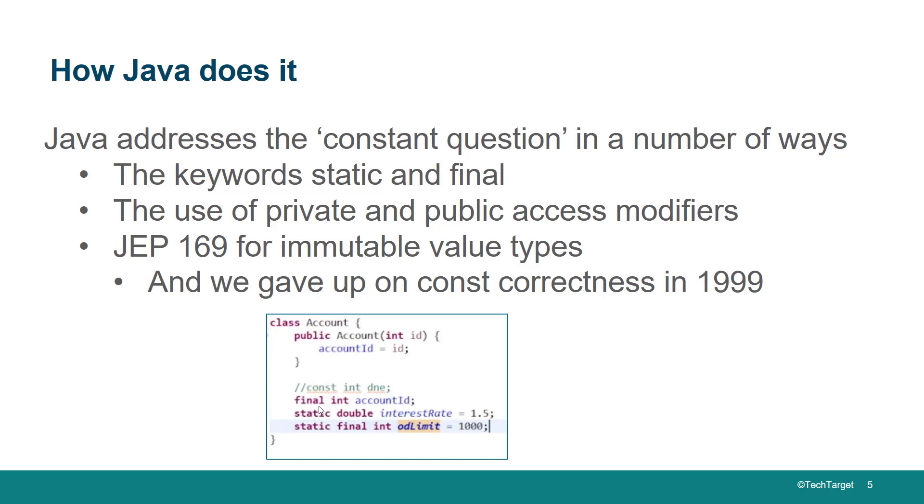If you have a bank account and I have a bank account, we both have different ID numbers. However, if maybe every single checking account has an overdraft limit of a thousand and that applies to every account, we call that static and final. You can see in this little example here that something that's constant has meaning at maybe the instance level and at the class level, and those meanings are different. Just one keyword to rule them all isn't going to work.